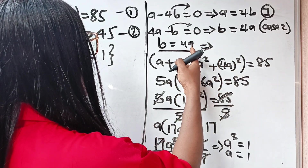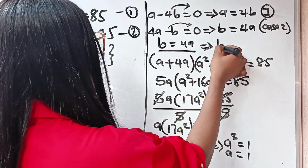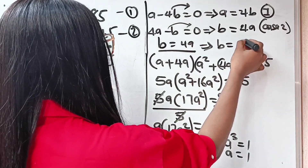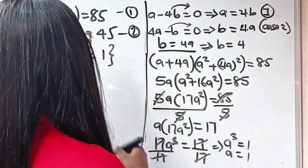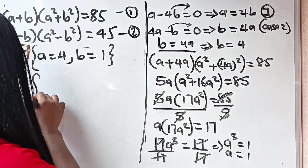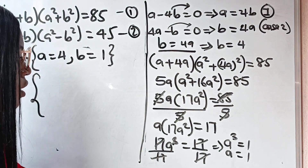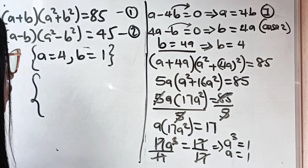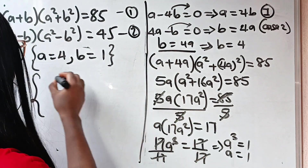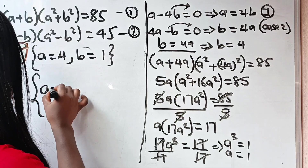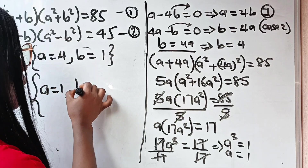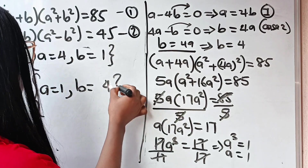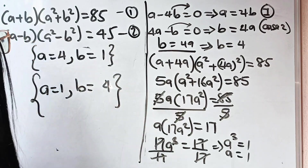So a equals 1, which means b equals 4 times 1 which is 4. So alternatively, another set of solutions is: when a equals 1, b equals 4. You can substitute these values to verify the solution.